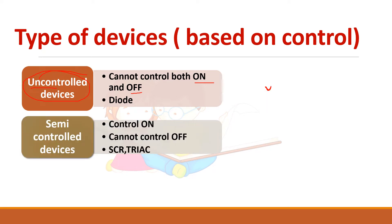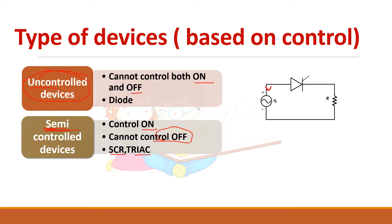Next is the semi-controlled device. SCR and TRIAC fall under this category. In SCR, during the positive half cycle it is forward biased, but it cannot turn on unless you give a gate pulse. Once you give a gate pulse it gets turned on, so the on process is under your control. However, the off process is not under your control, because only when the anode current falls below the holding current will the SCR turn off. So SCR is a semi-controlled device.